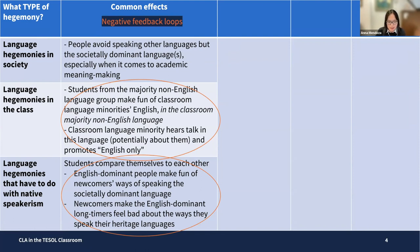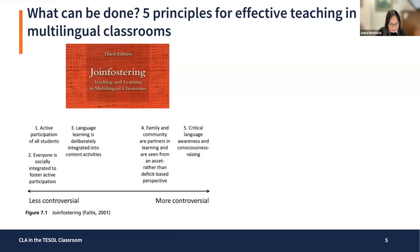The classroom discourse analyst Ben Rampton talked about the construct of feedback loops — it's the idea that because I make you feel bad about your ways of speaking, you'll get defensive and assert your strengths in other ways of speaking, and you might make me feel bad about my ways of speaking as you try to obtain a more positive identity position. So what we need to do is mitigate these types of hegemonies. For me, it's not just about promoting other languages in the class apart from English, but taking into account what it is that people do when all these languages are brought to bear in the class's social life.